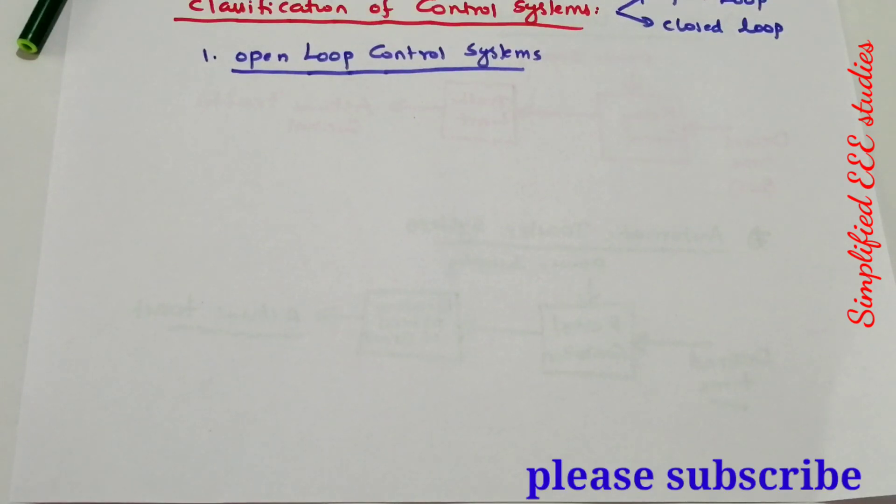In discussing open loop control systems, I covered the definition, general block diagram, and typical examples of open loop control systems.